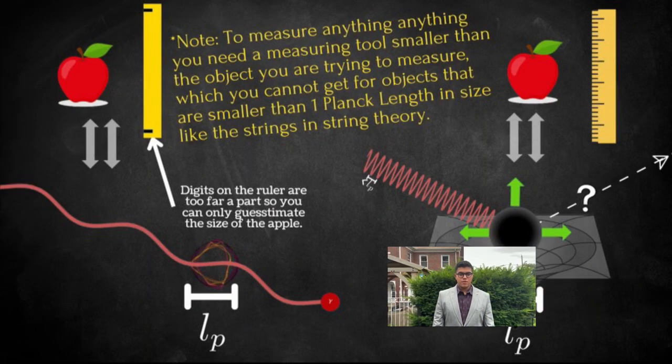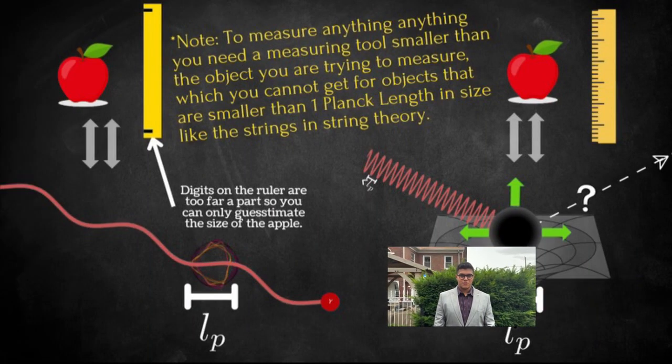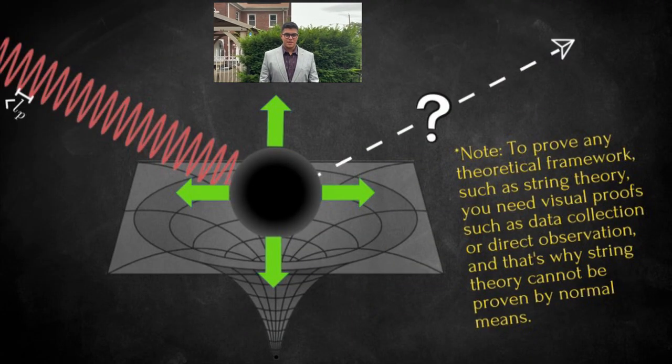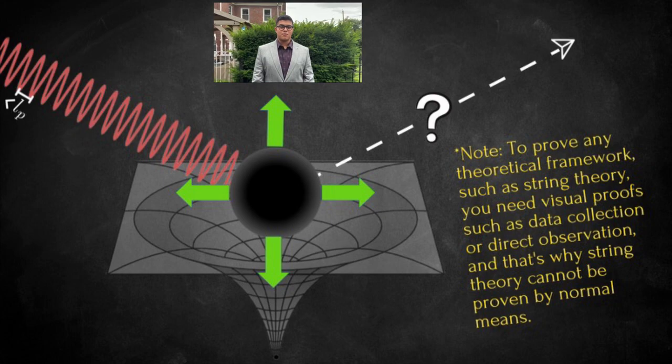But there is a problem. The strings in string theory are one Planck length. Yet to measure anything, you need a measuring tool smaller than the object. And since you cannot go smaller than one Planck length, it is impossible to see the strings in string theory, making it impossible to prove.